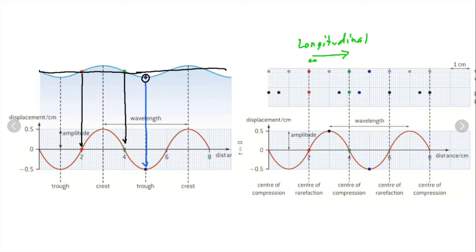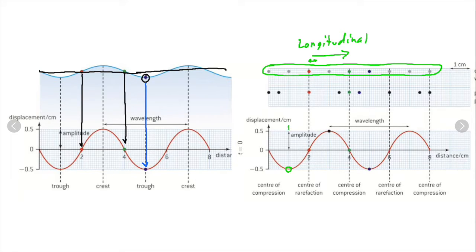The graph we draw for a longitudinal wave is still going to look like a transverse wave — it's still going to look like it's moving up and down. This upper line is where the particles in the medium would usually be — evenly spaced out. With the wave, the gray particle that should be in the middle has a negative displacement, so it's moved over to the left. The black one has a positive displacement because it's moved to the right. The ones on the dotted line at equilibrium positions haven't moved.